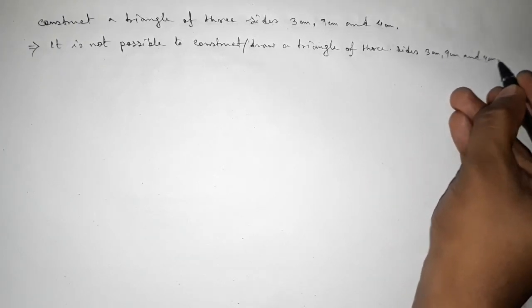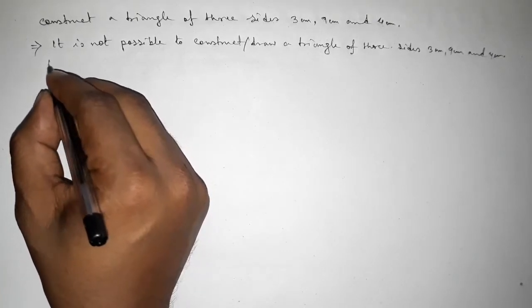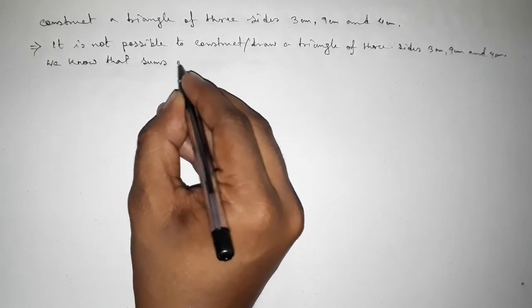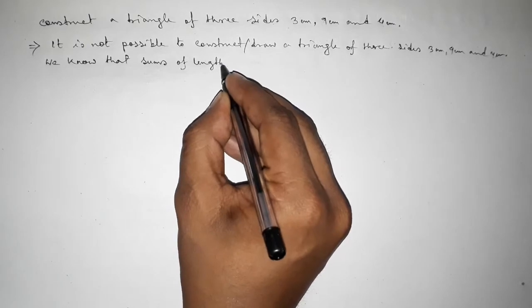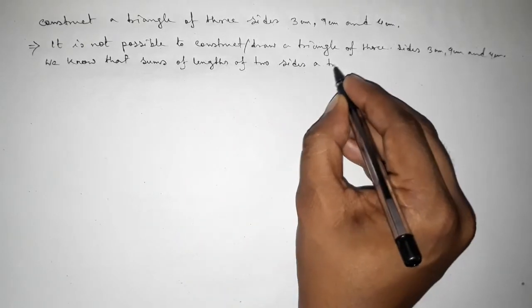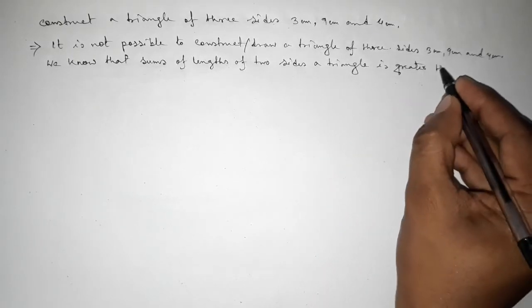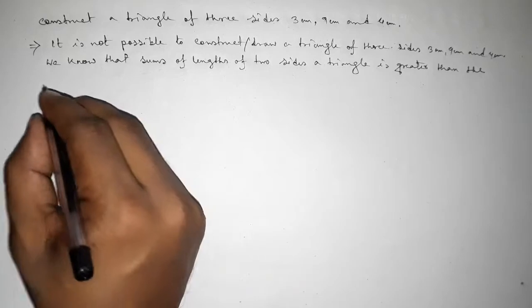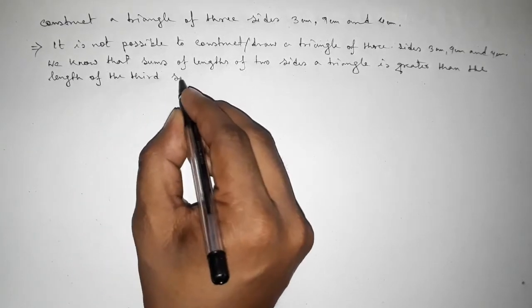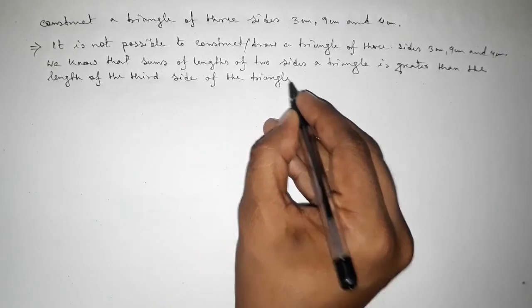We cannot construct a triangle with these three sides because we know the condition to construct or draw a triangle. The condition is that the sum of the lengths of any two sides of a triangle is always greater than the length of the third side.